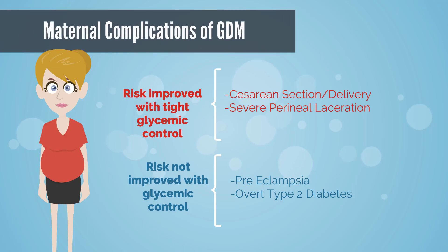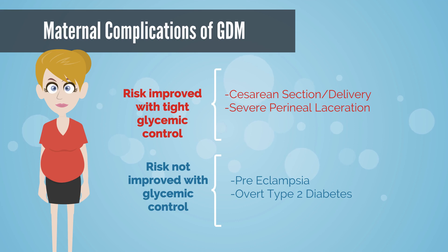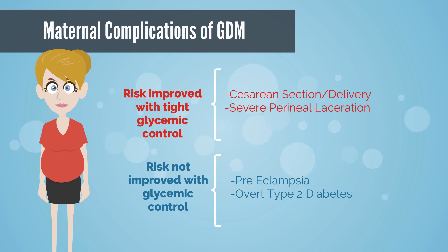Maternal risks include the risk of caesarean section and severe perineal lacerations. Women with gestational diabetes are also at a 20-30% increased risk of preeclampsia and a 50% increased risk for developing type 2 diabetes within 10 years.